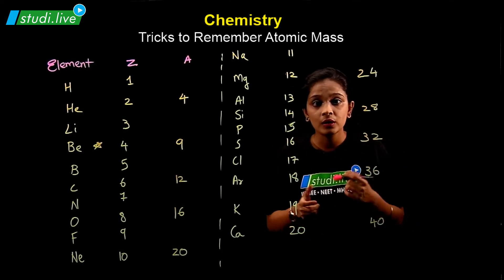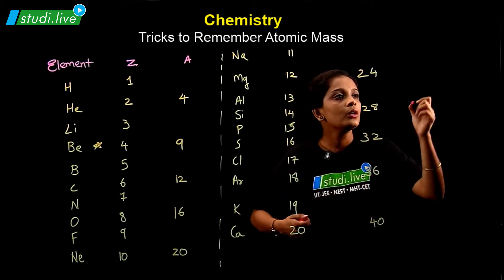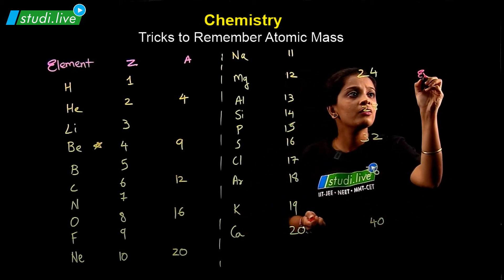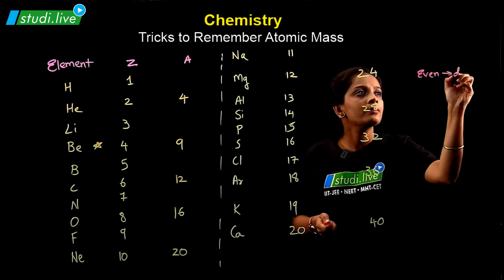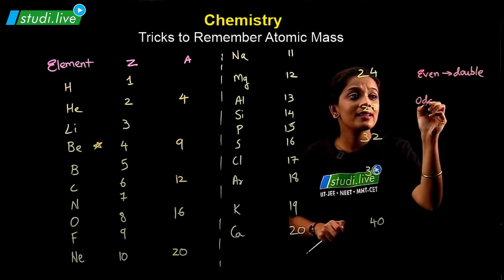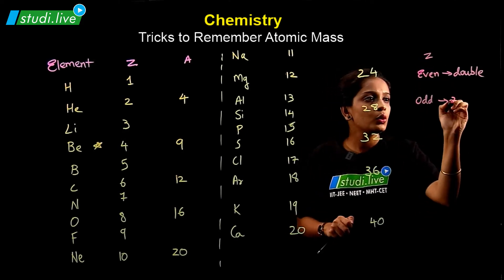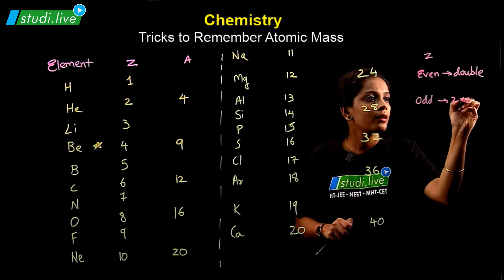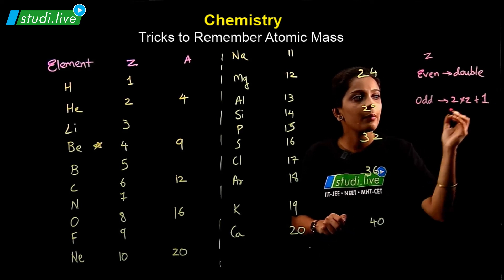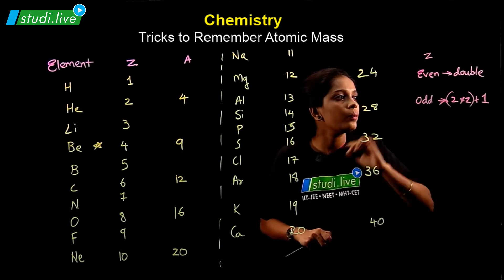Apart from this, for the odd number, for the odd number, you multiply by two then add one. So what we have used for even, you do double. For odd, odd Z value, for odd Z value, you do double, two times Z plus one. Two times Z plus one. Two times Z, then you do plus one.